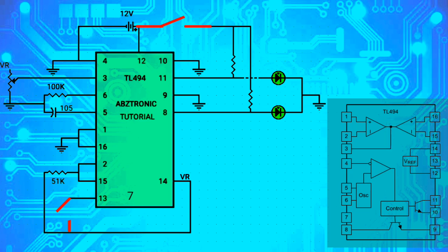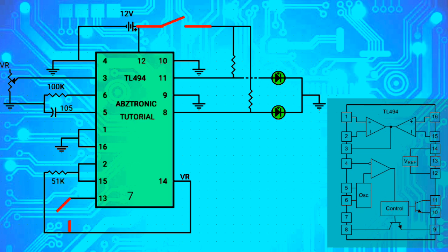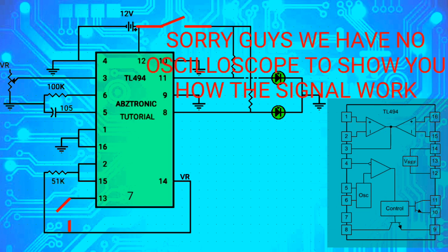Pin 4 is the DTC — dead time control. When the DTC is connected to ground, the pulse edge of the signal will be minimum. On the other hand, when the DTC is connected to high, the pulse edge will be longer, which is used to control the duty cycle.